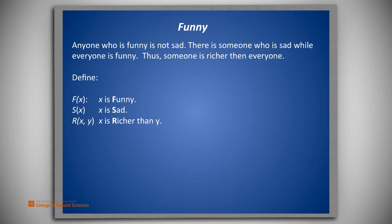From the story and these definitions, we may represent the two premises as: For all x, f of x implies not s of x. That is, anyone who is funny is not sad.